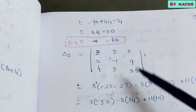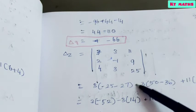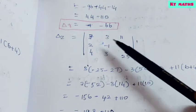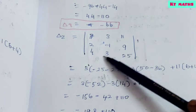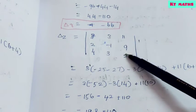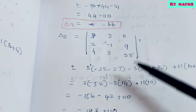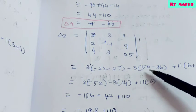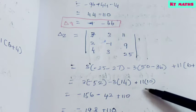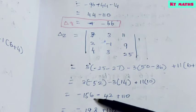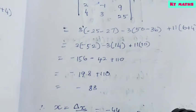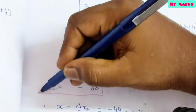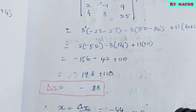Next, Δz. For Δz, we replace the z-coefficients with the constants 11, 9, 25. Expanding: 3 into (−52) = −156, minus 3 into (14) = −42, plus 11 into (10) = 110. So 110 − 198 = answer −88. Therefore Δz = −88.